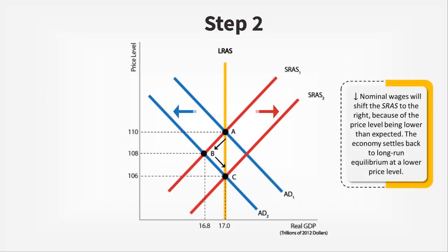Notice that output increases as input prices become flexible. The economy has once again reached potential output, but at a lower price level, from $108 to $106. The economy has come out of a recession, meaning the recessionary gap has closed and has experienced some disinflation or even deflation.